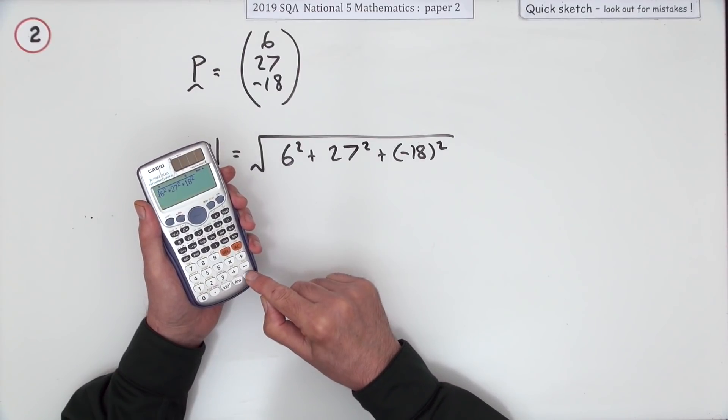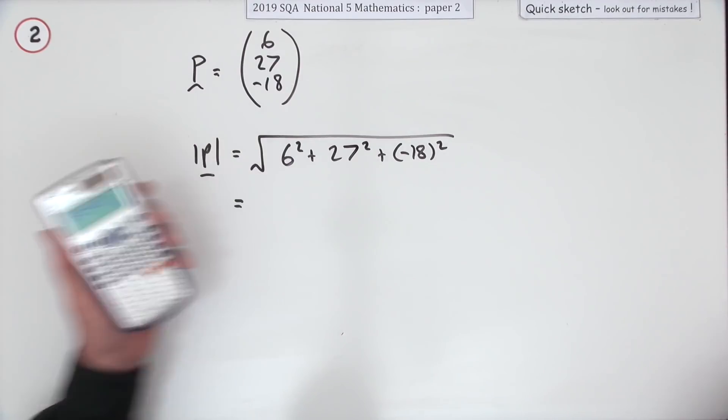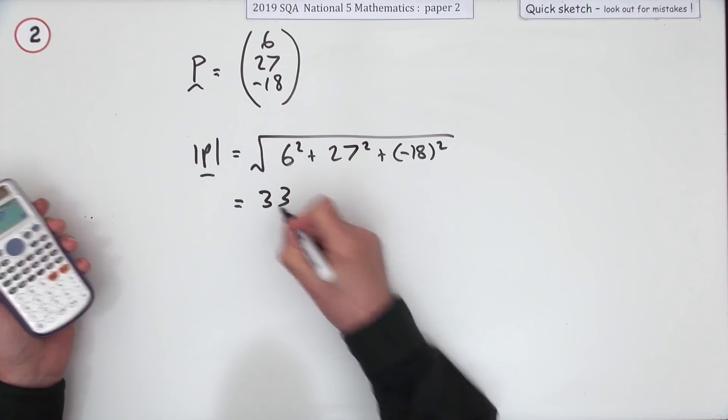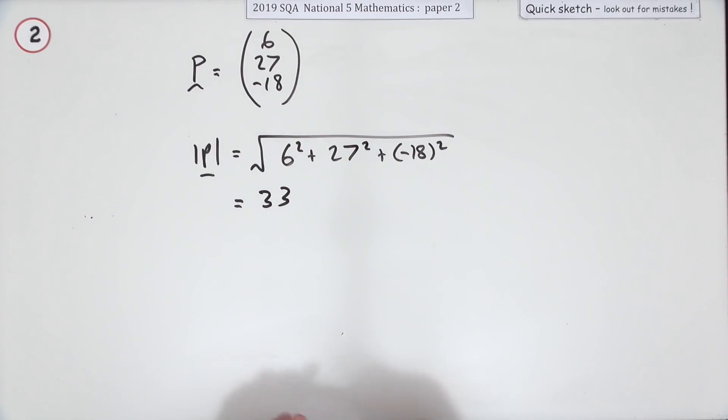Anyway, when you press the button it comes to 33. The magnitude of that vector is 33 units.